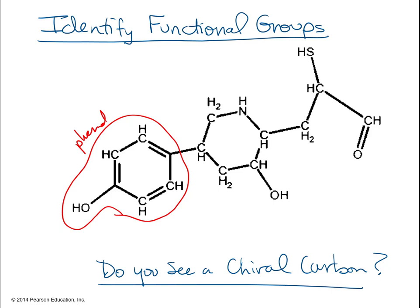But now when you see the other ring, do you see that it doesn't have alternating single and double bonds? So that's not an aromatic or a phenol. It has to have that double bond, single bond, double bond, single bond arrangement. So there are no other rings to identify.